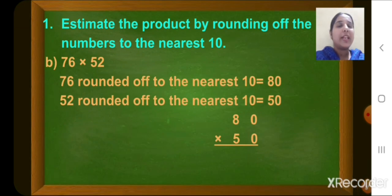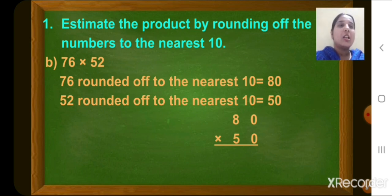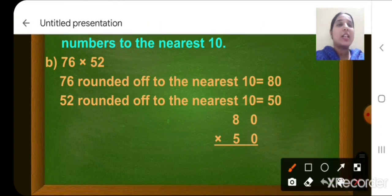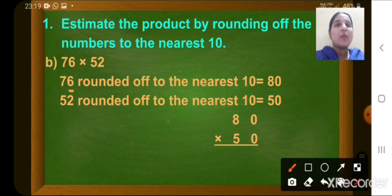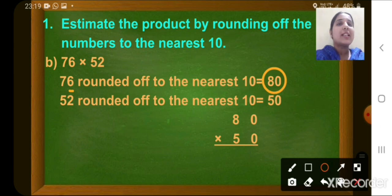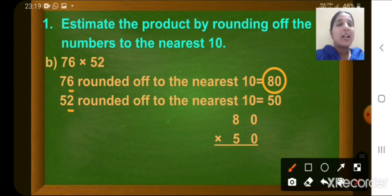Question number B is 76 multiplied by 52. First we will round off 76 to nearest 10. Look at the digit at the 1's place, which is 6, which is more than 5. So the round off of 76 will be 80. The round off of 52 — the digit at the 1's place is 2, which is less than 5. So the round off will be 50.